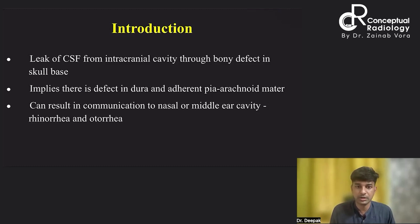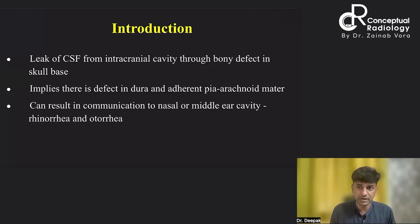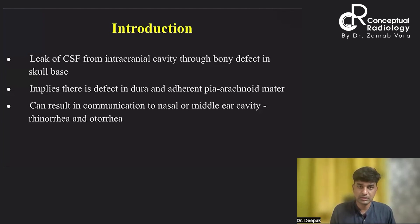This implies there is a defect in the bone, dura, and the adherent pia-arachnoid matter, because CSF is normally present in the subarachnoid space. For CSF to leak into the nasal cavity or middle ear cavity, there must be a defect in all three structures: the pia-arachnoid matter, the dura mater, and the bone.